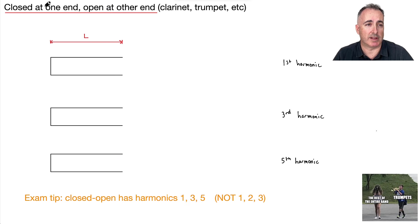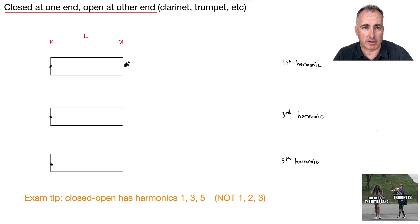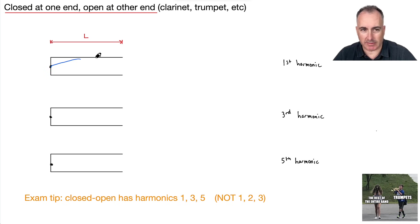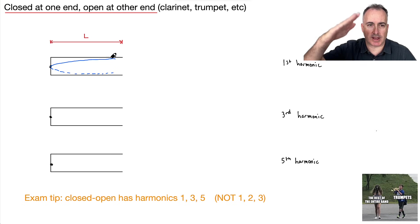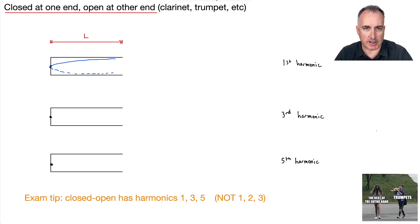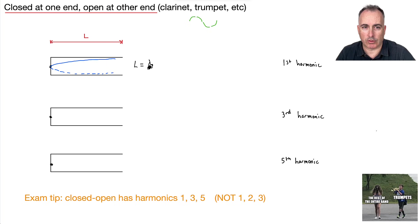Now let's look at a string closed at one end and open at the other — like a clarinet or trumpet where you blow in one end and the other end is open. The closed end always has a node, but the open end is free to flap around — no node there. The simplest version goes like this. Considering the fraction of a wavelength: a full wavelength would be this whole cycle, so we've got a quarter. Therefore L = λ/4. That's the first harmonic.